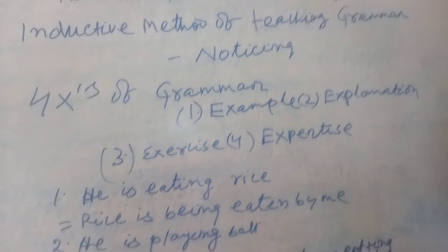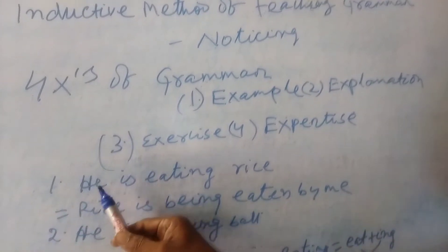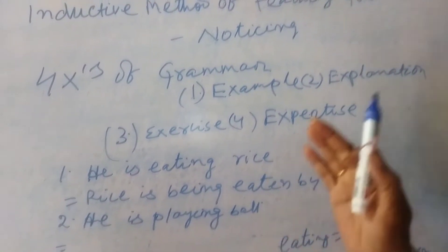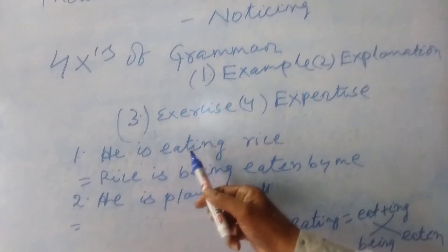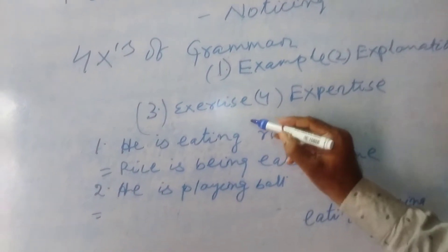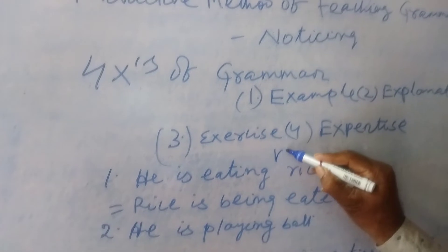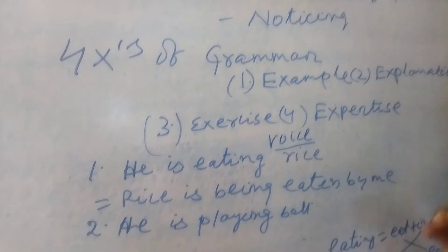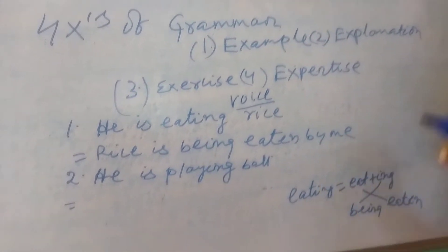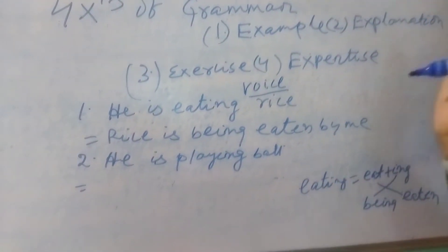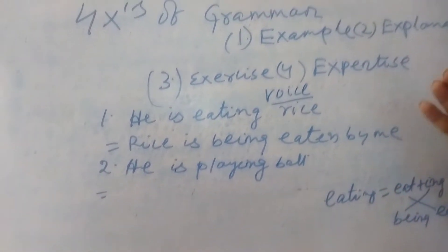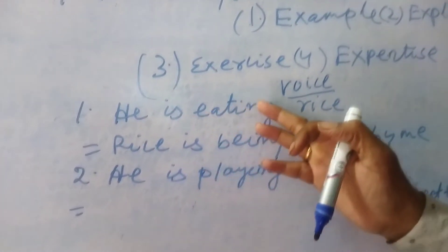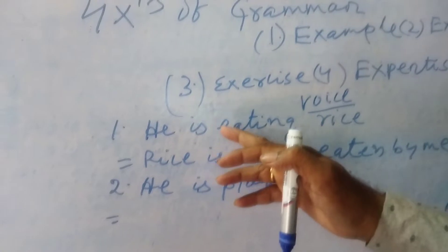Now let's come to the example. Simply write down, without uttering a single word in class in front of the students: 'Simon is eating rice.' That means you are going to teach them voice — passive voice. Only write: 'He is eating rice.' Never say anything because you are just giving examples. Never say 'this is subject, this is verb, this is object.' Simply write: 'He is eating rice.'